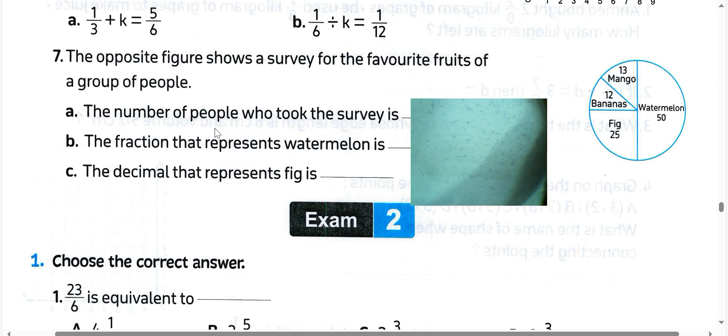Next question, this figure shows a survey for favorite fruits of a group of people. The number of people who took the survey: we add all the numbers, 13 plus 12 plus 25 plus 15, which equals 100. The fraction that represents watermelon: 50 people like watermelon from 100, which is 1/2 or 0.5. The decimal is 25/100, which equals 0.25.